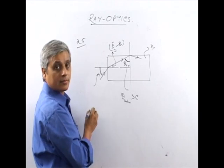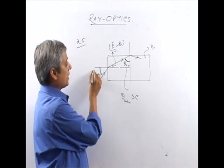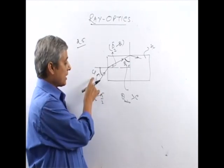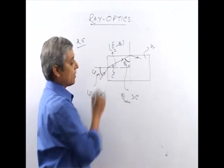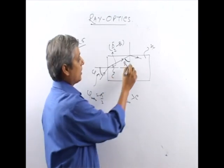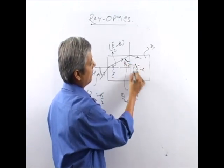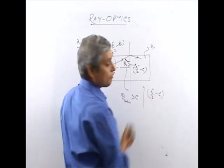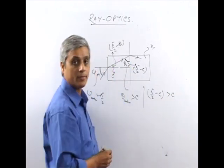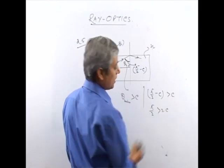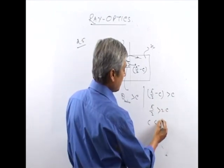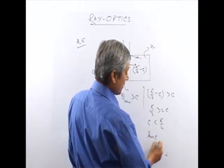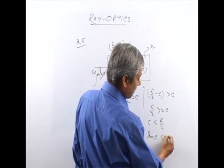The maximum value of the angle of incidence at the top face is 90 degrees. When this is maximum (90 degrees), the angle at the lateral face becomes the critical angle C. So the least value of theta is pi/2 minus C, and this must be greater than C.